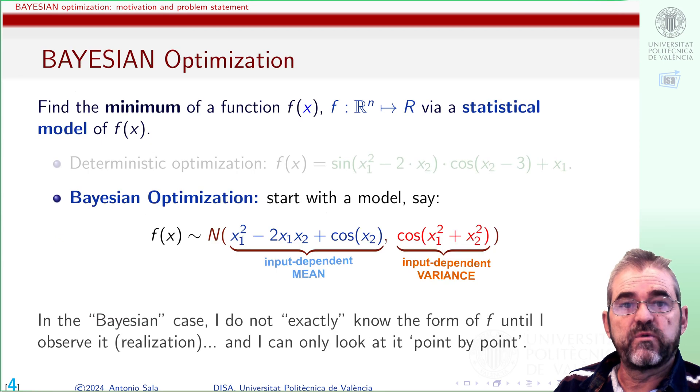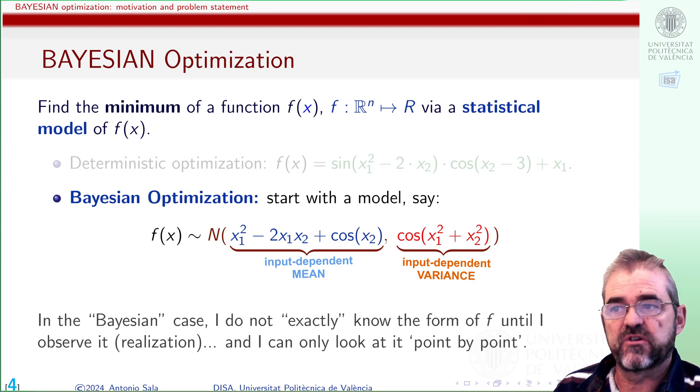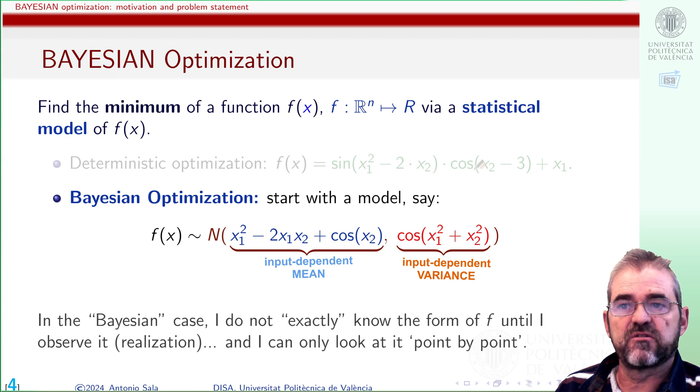On the other hand we had Bayesian optimization in which the basic idea was that my function was considered to be a random variable. So instead of f(x) being cosine of whatever, f(x) will be cosine of whatever in mean but it will have some variance so 95 percent of times will be plus minus two standard deviations for instance. So at each x my function was a random variable. That was the basic statistical model so that the basic assumption is that I do not actually know the value of f(x) until I go and I evaluate it.